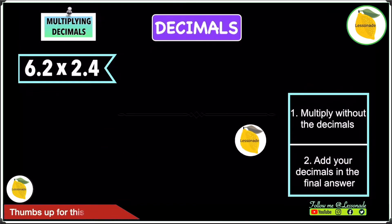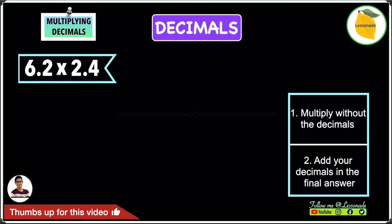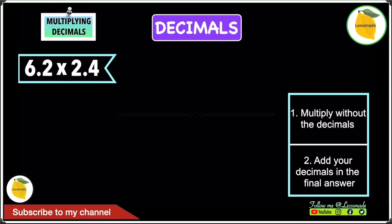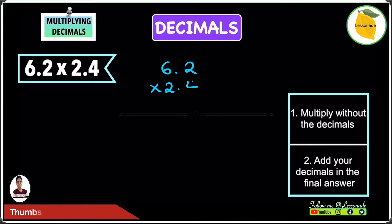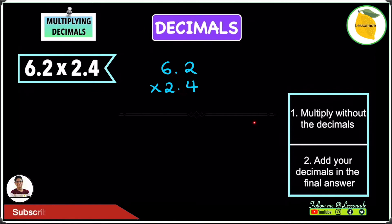Now let's have a look at a multiplying decimals example. The example we have is 6.2 times 2.4. Let's start by arranging these numbers out as we would when multiplying any numbers. The first step is to pretend there are no decimal points and to multiply without the decimals.